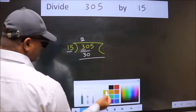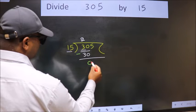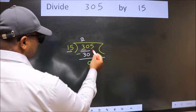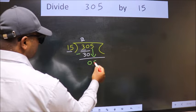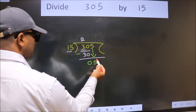Now we should subtract. We get 0. After this, bring down the next number. So 5 down.